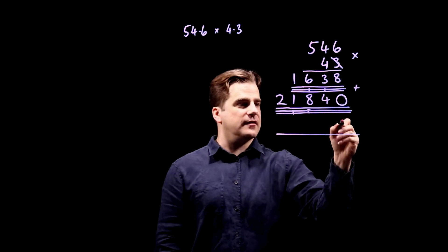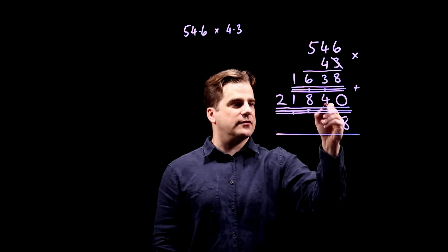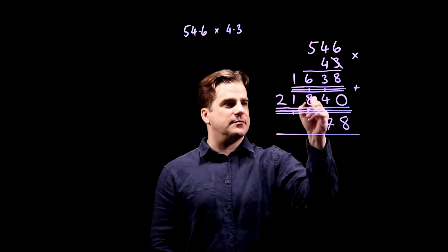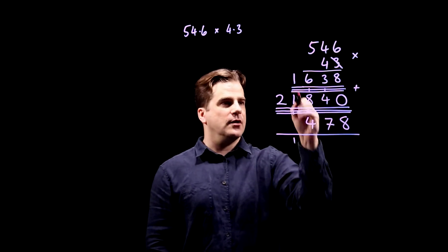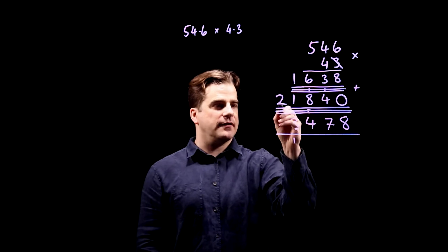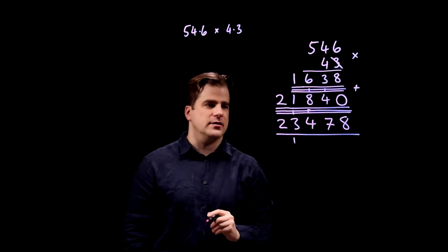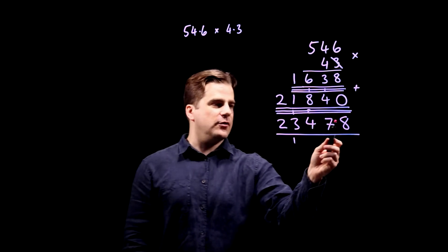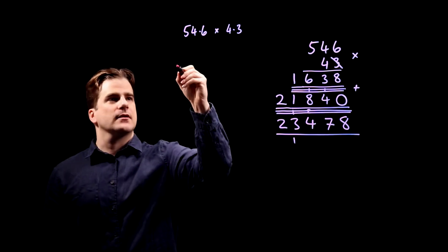So eight plus zero is eight, three plus four is seven, six plus eight is 14, one plus one plus one is three, and that just leaves two. Okay good, so we've got 23478.